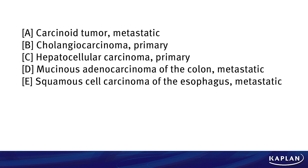Is it A, carcinoid tumor, that is metastatic. B, cholangiocarcinoma, primary. C, hepatocellular carcinoma, also primary. D, a mucinous adenocarcinoma of the colon, which is metastatic. Or E, a squamous cell carcinoma of the esophagus, which is metastatic.